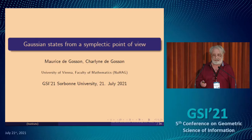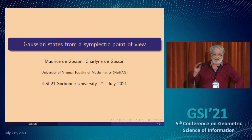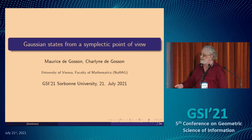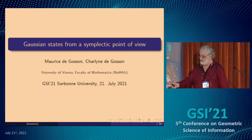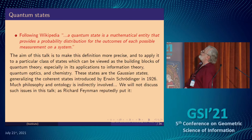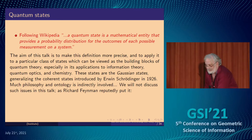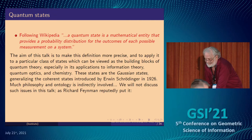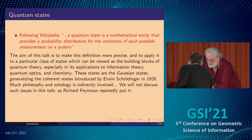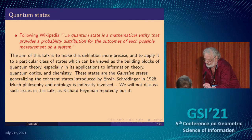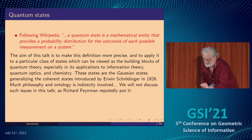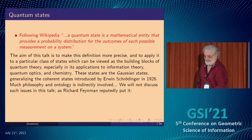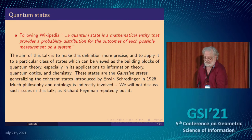Even if this topic is very simple, there are still problems at the cutting edge of current research, which I'll mention a little bit later. So following Wikipedia, a quantum state is a mathematical entity that provides probability distribution for the outcomes of possible measurements of a state. I would try to give a more precise working definition of that and see a little bit of the consequences.